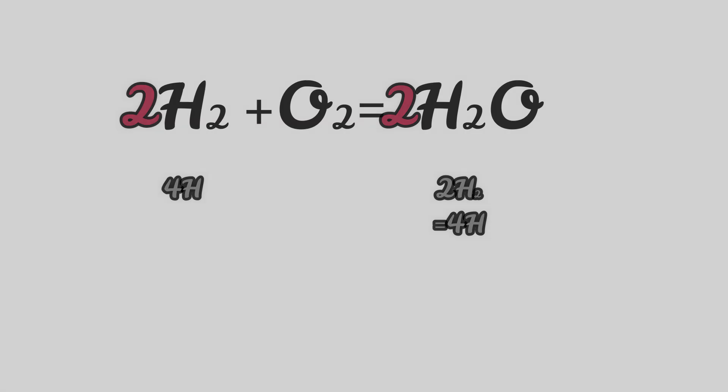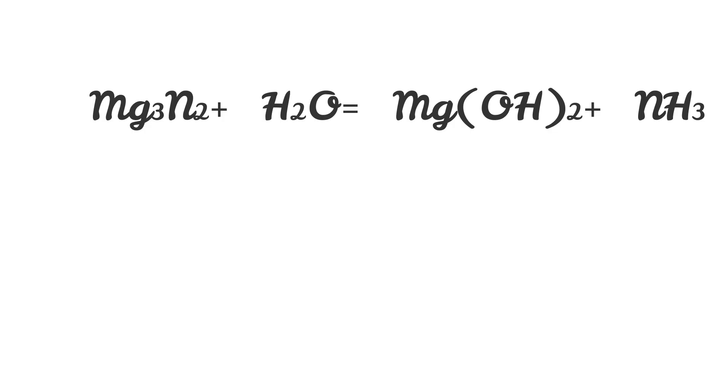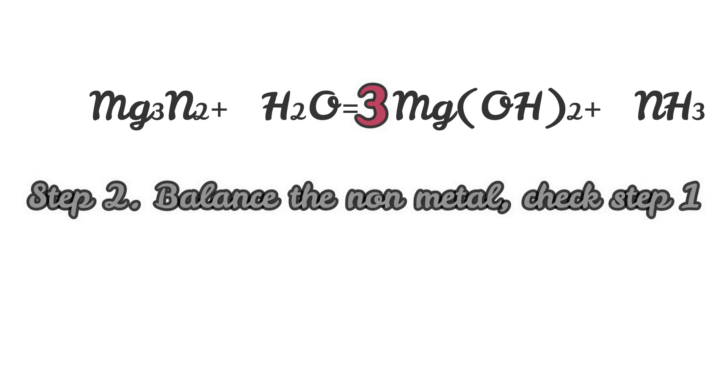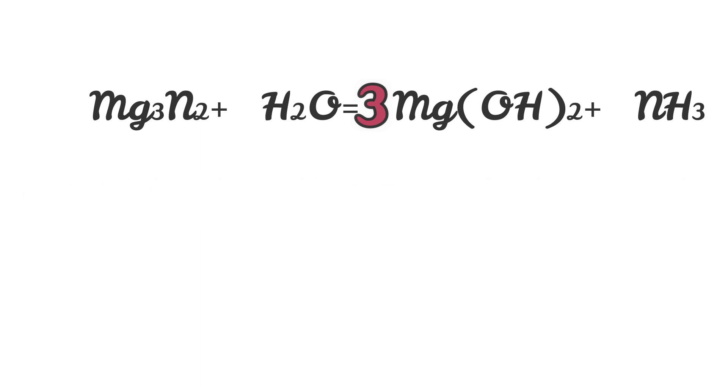All right, now that was easy, let's try another one. Now to balance this equation, let's start from step one. Magnesium is the metal here. We can understand clearly that we have to put three before Mg(OH)2.